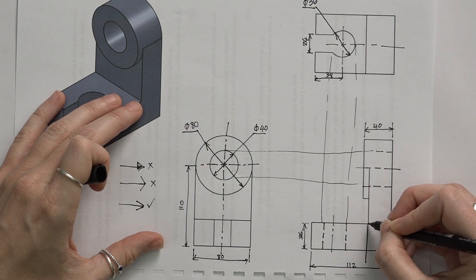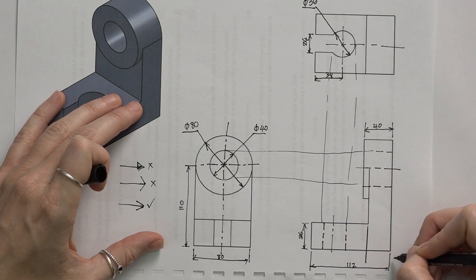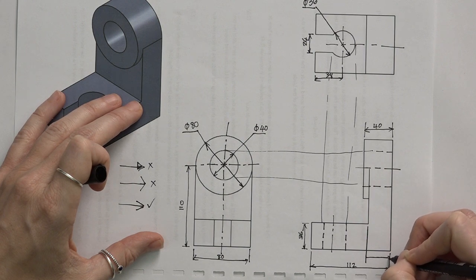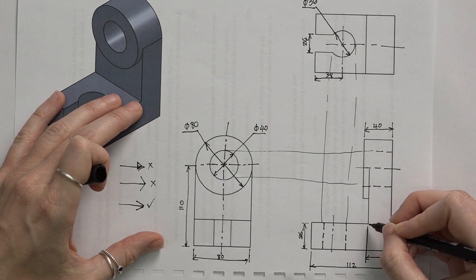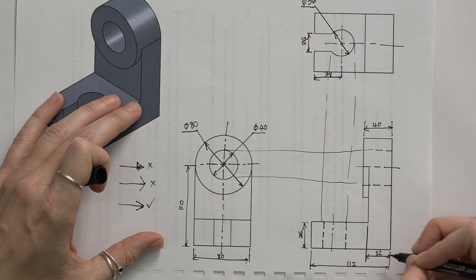So this is the part of the component we want to dimension. And it's between this line and that line. So the extension line does not run from the base, but it actually runs from this point, slightly away from it. And we can fill in this dimension over here.